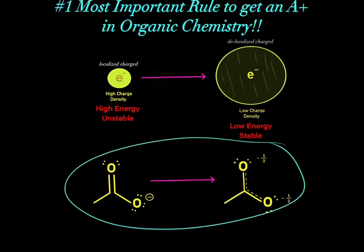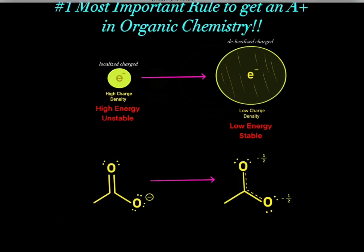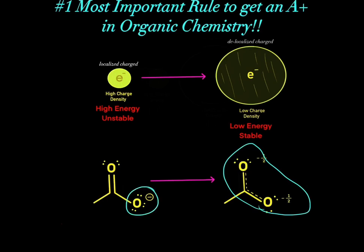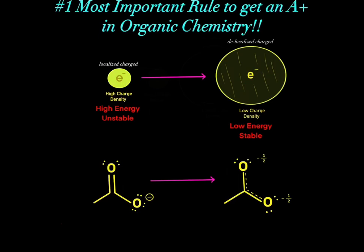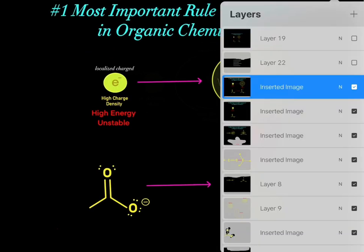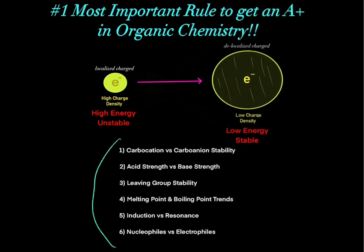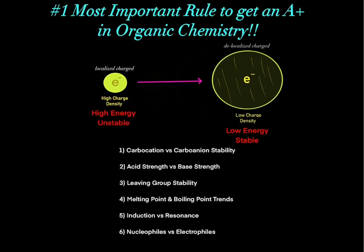For example, why do we do resonance? In a given structure, we have all that negative charge localized on one oxygen. When we go through resonance, we get to spread out that negative charge over a larger volume — the same amount of charge but over a larger volume gives lower charge density, lower energy, and greater stability. This rule explains most of the phenomena you see in organic chemistry. There are really just a few principles you need to understand to master organic chemistry and get an A+. I have a link to videos that go over each of these principles in more detail below.